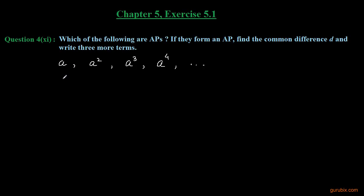Here is the eleventh part of question 4 of exercise 5.1 of chapter 5. In this question we are to check whether this sequence is an AP or not. If this is an AP, we have to find out the common difference D and we have to write three more terms of this sequence. So let us check: is this an AP or not?